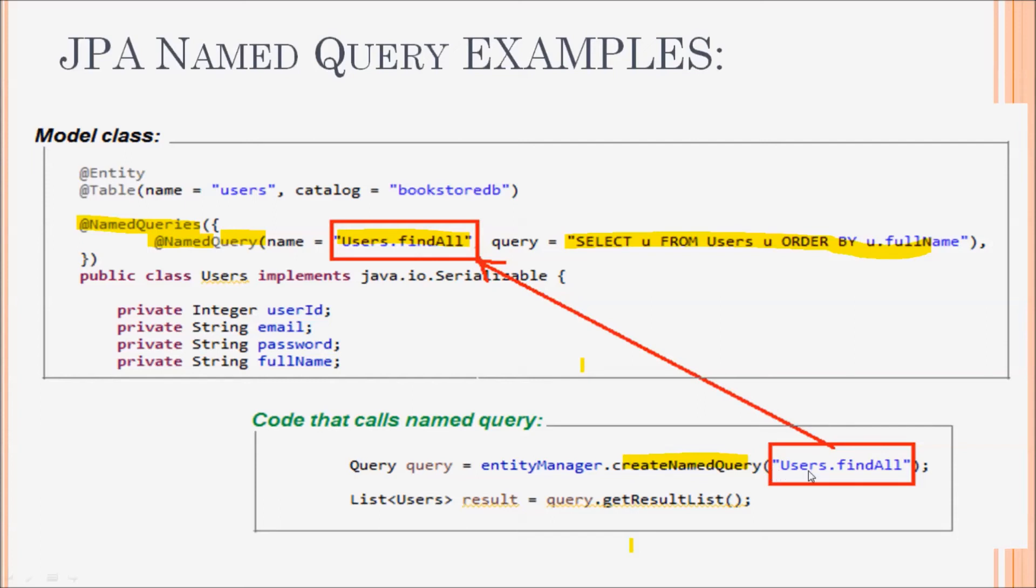JPA automatically loads named queries that are embedded in model classes, so you can call them in your code. The benefit of using named queries is that you can centralize related queries in one place, typically in the model classes, so you can manage the queries easily when the code grows and becomes more complex.